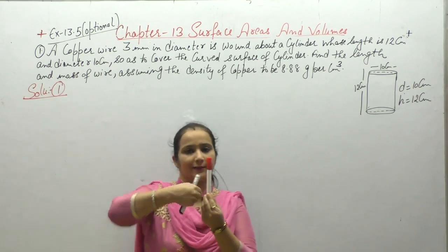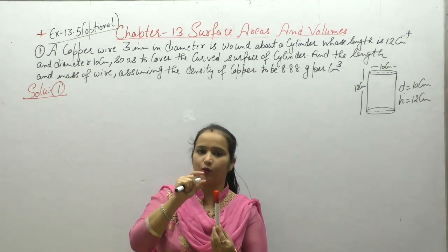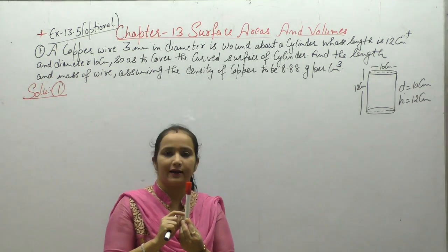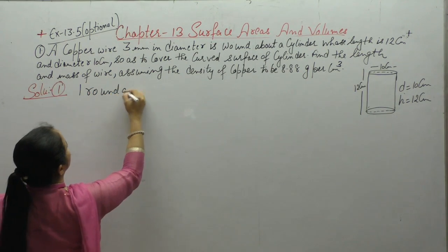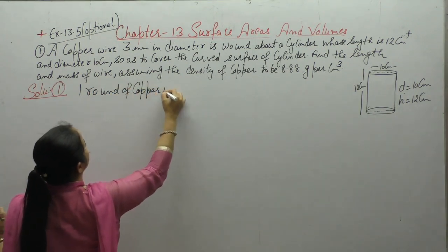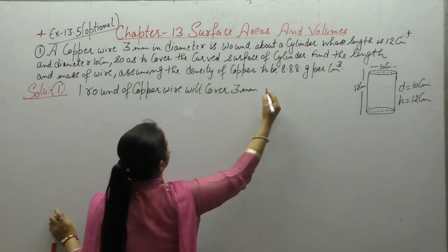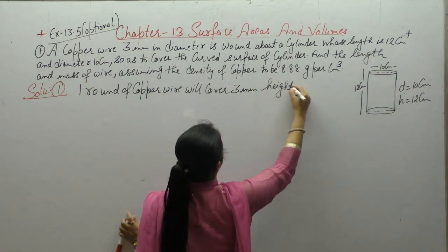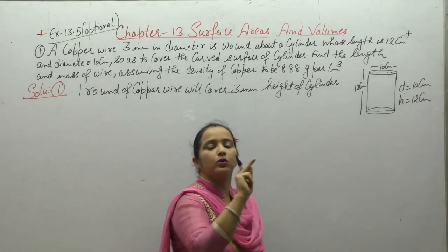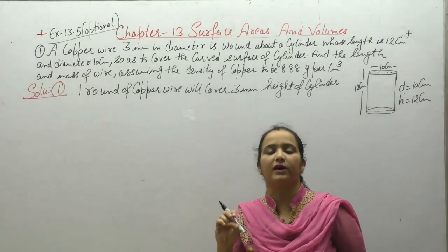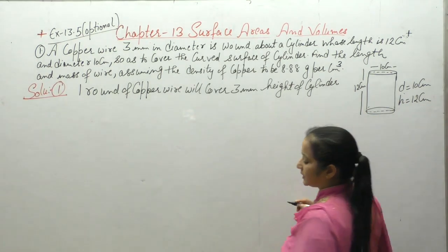The diameter of this cylinder will cover the height of the ribbon. We can say that one round of copper wire will cover 3mm height of cylinder. If I have one round of copper wire, then the diameter of copper wire will cover the width of this cylinder.